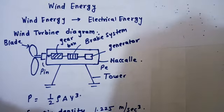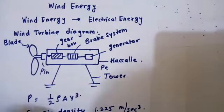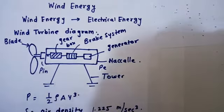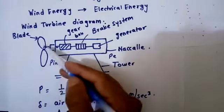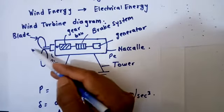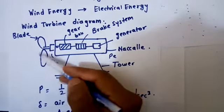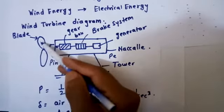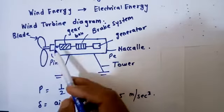First, we will see the wind turbine power diagram. In the wind turbine power diagram, there are some important mechanical features and electrical features. This is the blade. The blades are running through the power from the wind side. If wind direction is according, the blade is moving.